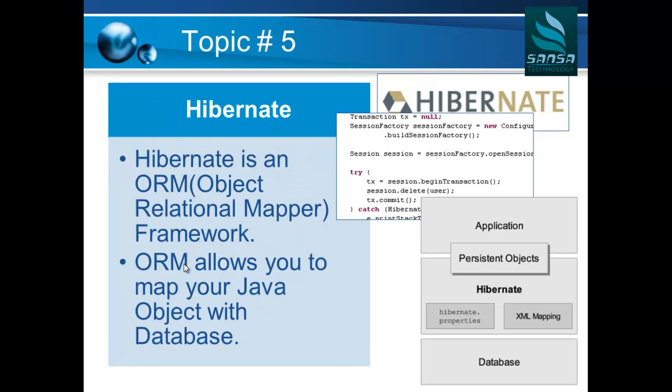After that, we are going to move to Hibernate. In an application, once you have received data — say a username and password — you need to talk to the database to validate the user. You have multiple options: you can use JDBC, which is the primitive type of database connection from Java, or something more advanced. ORMs, or Object Relational Mappers, are a popular concept in Java EE. We will learn how Hibernate can be used to map your Java objects with a database.